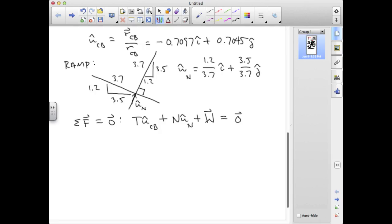So, in terms of x and y components, I have minus 0.7097t in the I direction, and I have plus 1.2 over 3.7n in the I direction equals 0. Call this equation 1.